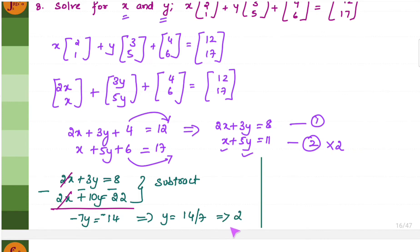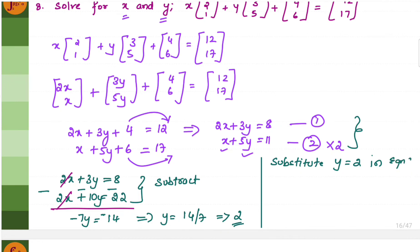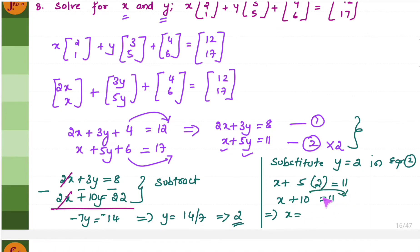Now that we know Y equals 2, we substitute it into equation 2 to find X. X plus 5 into 2 equals 11, so X plus 10 equals 11, which gives X equals 11 minus 10, which is 1. Therefore X equals 1 and Y equals 2.